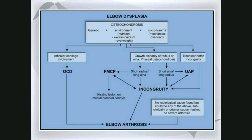If the physis is affected by osteochondrosis, there may be growth disparity between the radius and ulna — a small, microscopic disparity not obvious on a radiograph. In cases of a short radius or long ulna, as the ulna keeps growing, the medial coronoid process pushes against the humeral condyle, resulting in fissuring and fragmentation of the cartilage, causing a fragmented medial coronoid process. This growth disparity can also result in elbow incongruency, with the eventual end result being arthrosis.